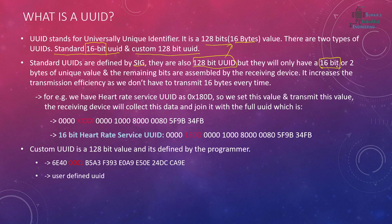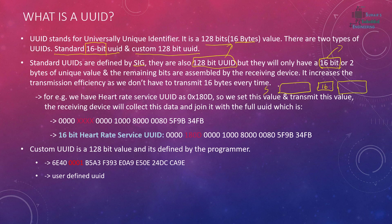In order to reduce the burden on the advertisement packets, they came up with the idea of a 16-bit UUID. We only send 16 bits in the advertisement packet, and the remaining bits are assembled by the receiving device, making it 128 bits again. The 16-bit part is transmitted and the other remaining part is already known on the scanner side.